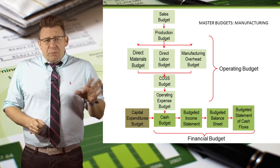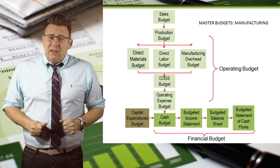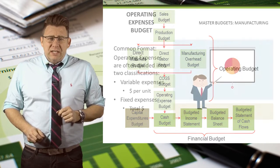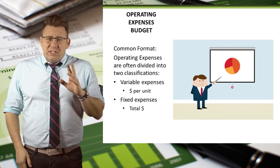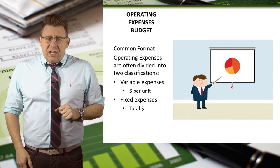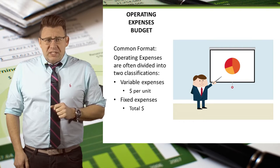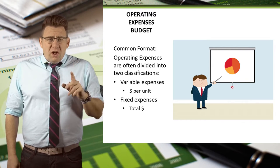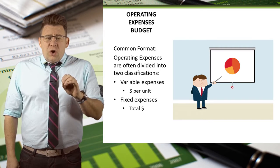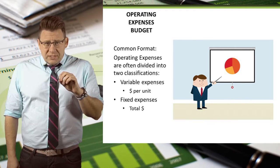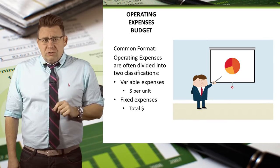The operating expense budget is the seventh budget completed in the master budget process. A common format is to divide operating expenses into two classifications: variable operating expenses and fixed operating expenses. Recall that variable costs are shown as per unit costs, where fixed costs are shown in total dollars.